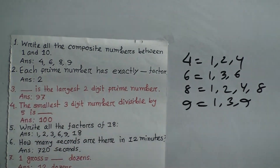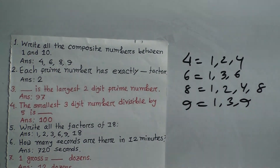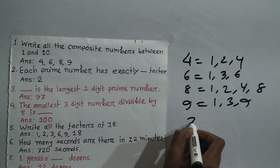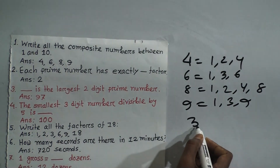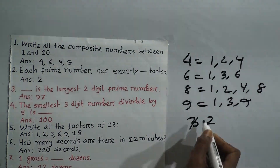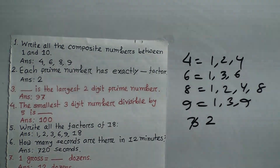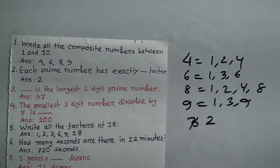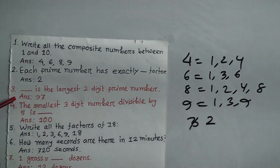Question 2: Each prime number has exactly two factors. A prime number has exactly only two factors — 1 and itself. For example, 3 is a prime number; it has exactly two factors: 1 and 3. And 2 has only two factors: 1 and 2. Therefore, each prime number has exactly two factors.